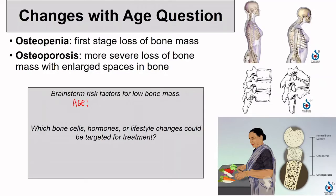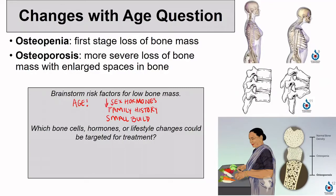Other significant changes that happen with age include decreased sex hormones — this can look like menopause or a general decrease in testosterone. Family history and ancestry will also contribute, and having a small build to begin with means the process will progress more quickly. Another risk factor is inactivity: if we're not putting enough stress and strain on our bones, we're more likely to lose bone mass.